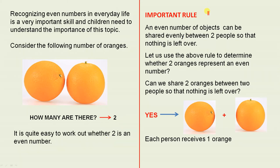Now here's an important rule which helps us to work out whether a number is even. An even number of objects can be shared evenly between two people so that nothing is left over. Let us use the above rule to determine whether two oranges represent an even number. Can we share two oranges between two people so that nothing is left over? Yes, and here's how we do it.